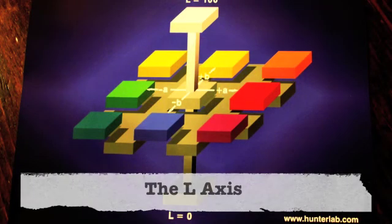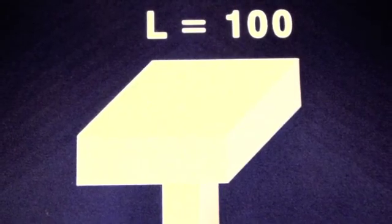The L-axis is a measure of the lightness of your product. On the L-axis, L equals 0 is total absorption, whereas pure white would equal 100.